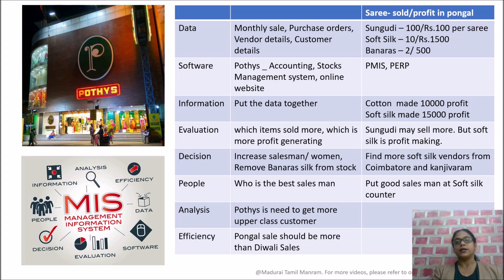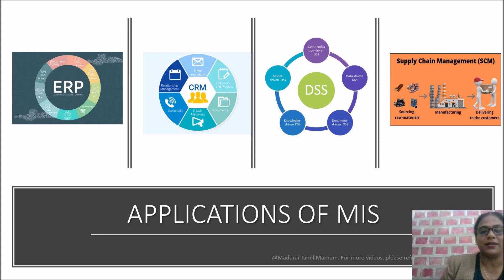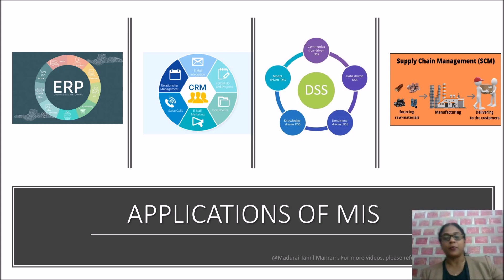Next: applications of information systems, specific to MIS. There are four areas. What are they? ERP, CRM, DSS, and SCM — Enterprise Resource Planning, Customer Relationship Management, Decision Support System, and Supply Chain Management. These are the major applications of MIS. You have to remember these.